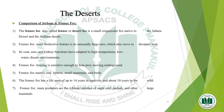Further characteristics of fennec foxes: the fennec fox is also called fennec or desert fox. Its ears and kidney functions have adapted to high-temperature, low-water desert environments. Fennec foxes' hearing is sensitive enough to hear prey moving underground. They mainly eat insects, small mammals, and birds. Fennec foxes have a lifespan of up to 14 years in captivity and about 10 years in the wild. Their main predators are African varieties of eagles, owls, jackals, and other large mammals.